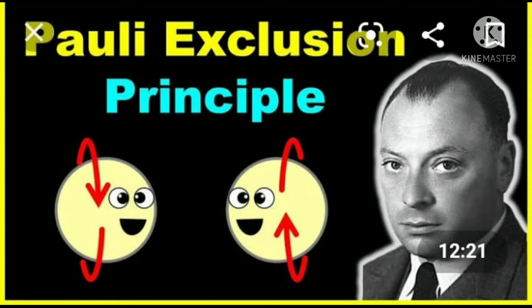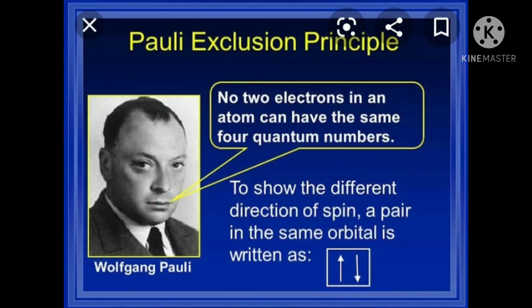Pauli's exclusion principle states that no two electrons in an atom can have the same set of four quantum numbers. In other words, according to the principle, two electrons in an atom will differ in at least one of their quantum number values.